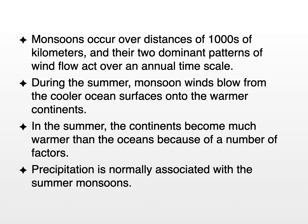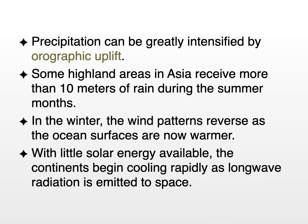During the summer, monsoon winds blow from the cooler ocean surfaces onto the warmer continents. The continents become much warmer than the oceans, causing low-pressure systems to form over the continents. The water, which is cooler over the Indian Ocean, forms a high-pressure system, and the wind blows from high to low. Precipitation is normally associated with summer monsoons — even in South America and North America, with little topographic relief, there is an increase in precipitation mainly in the form of thunderstorms. In Southeast Asia and India, where there are great changes in topography, this precipitation is enhanced considerably through orographic uplift. In some highland areas, more than 10 meters of rain can fall in the summer months.